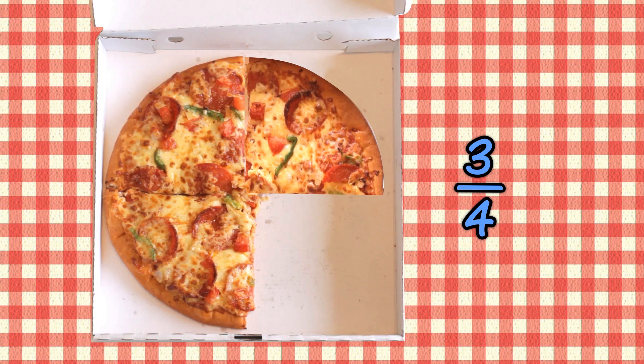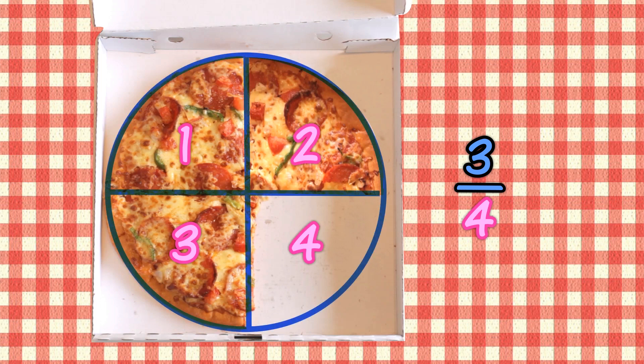First, what is a denominator? A denominator is the bottom number in a fraction. It shows how many equal parts the item is divided into.